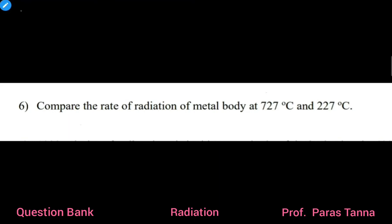Chapter radiation. Short answer 1. Question number 6. Compare the rate of radiation of metal body at 727 degrees Celsius and 227 degrees Celsius. Temperature for first case of the body, let's say T1, is given as 727 degrees Celsius, that is 727 plus 273,